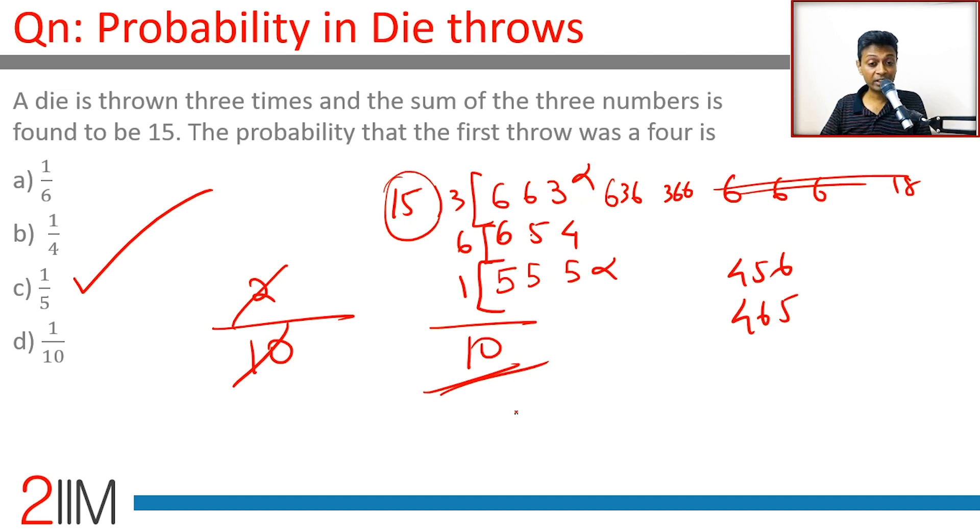To have a sum as 15, there are 10 possible outcomes, out of which 2 will have the first throw as 4. So 2 out of 10, 1 out of 5.